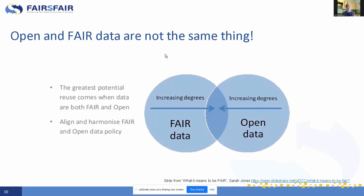This slide is quite useful for sharing with your researchers because it does help you to see that open and FAIR are not the same thing. You can have FAIR data that is closed and you can have open data that's not FAIR. It's good to get your researchers to understand that there are grades in fairness and grades in openness. The most value will come when you've got FAIR and open data, but FAIR data can be closed. If you've got sensitive data, you can still make it FAIR even if it can't be shared widely or openly.